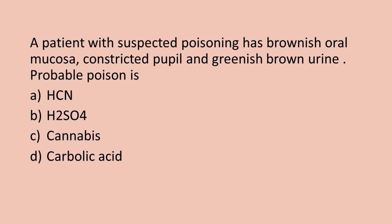Let's answer this question: A patient with suspected poisoning has brownish oral mucosa, constricted pupil, and greenish brown urine. The probable poison will be: Option A — HCN, Option B — Sulfuric Acid, Option C — Cannabis, Option D — Carbolic Acid. The answer is Option D — Carbolic Acid.